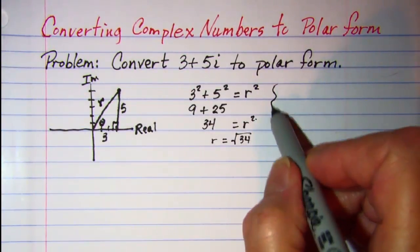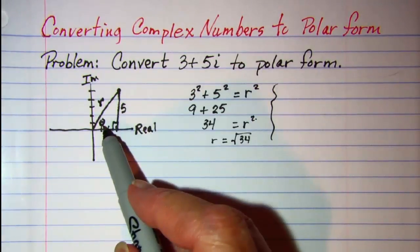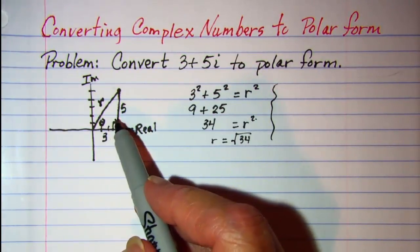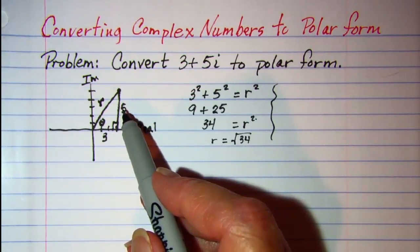Then to find our theta we can use right triangle trig so we know that the tangent is opposite over adjacent.